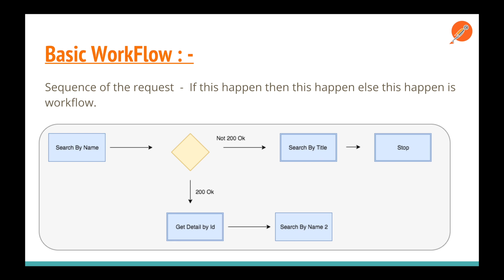And if request three passes, we move to request five and skip request four, because we don't want it in this particular flow. That's what workflow is all about. Let's take a real example of the workflow I showed you in the diagram.